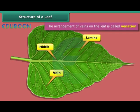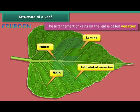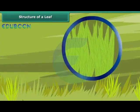When veins appear to branch from the midrib, the venation is called reticulated venation. When the veins run parallel to one another, the venation is termed as parallel venation. This type of venation is generally found in the leaf of grass.